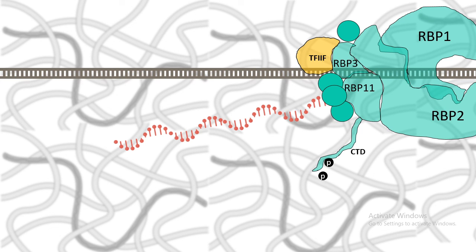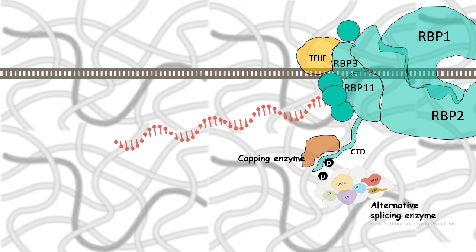Before even the process of transcription can stop, the splicing machinery started its work. When the RNA polymerase is moving along the 5 prime to 3 prime direction and transcribing the mRNA, the phosphorylated C-terminal domain is a site for binding capping enzymes and the alternative splicing enzymes. This process happens simultaneously while the transcription is going on. Imagine how complicated this process is and how much temporal control this process requires.